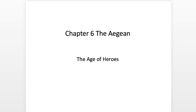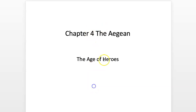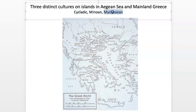Let's start on the Prehistoric Aegean, Chapter 4. This is the slide lecture — 'The Age of Heroes' is my subtitle. It is actually Chapter 4, the Prehistoric Aegean. We're going to be looking at the geographic area and three distinct cultures: the Cycladic, the Minoan, and the Mycenaean culture.